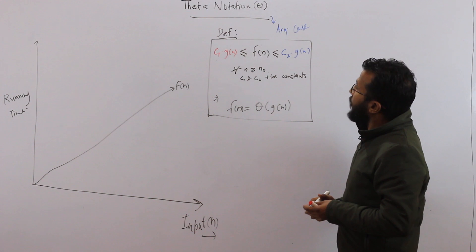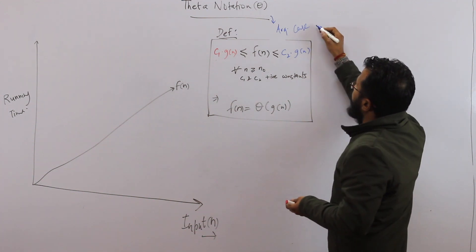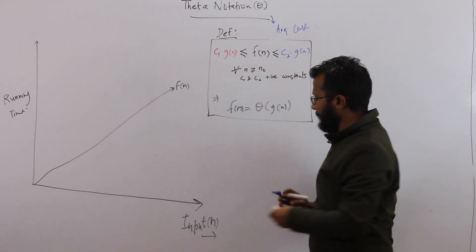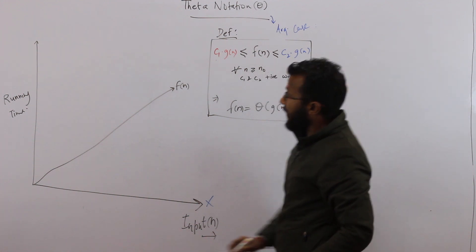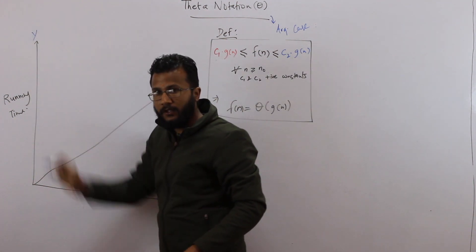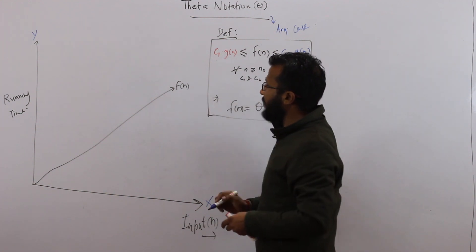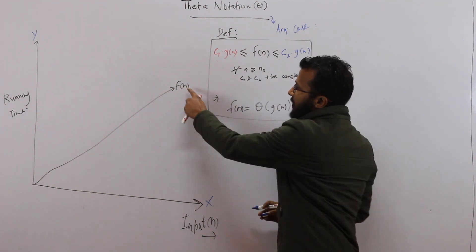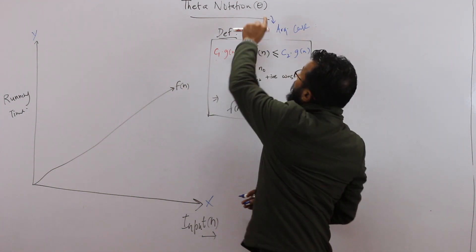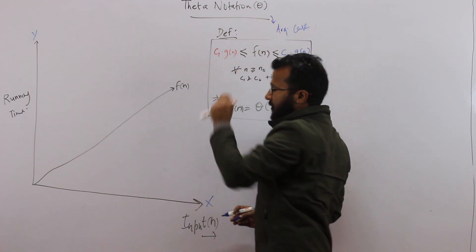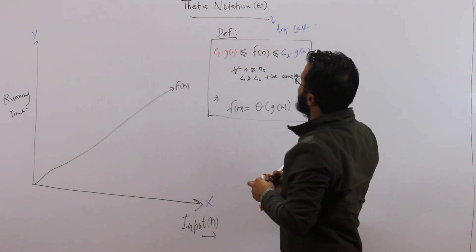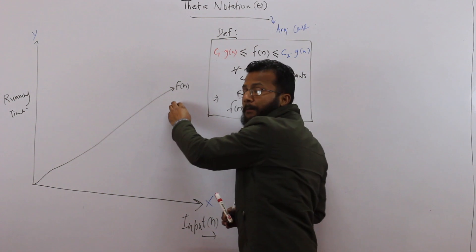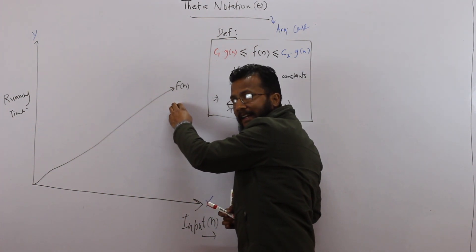Now if you look at theta notation, since it represents the average case, you have to show — as we've done previously — that the x-axis represents the input and the y-axis represents the running time of the algorithm. Let's say f(n) is the running time of any algorithm. For theta notation, you have to show that f(n) is both upper bounded and lower bounded by some function of n.